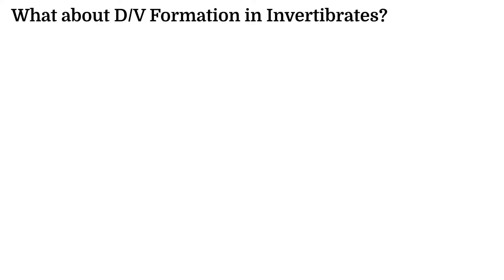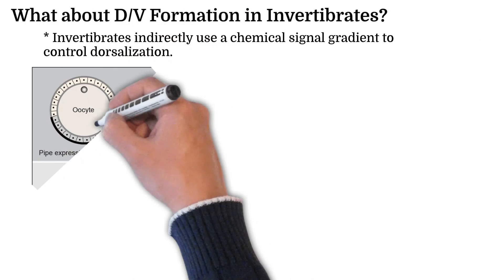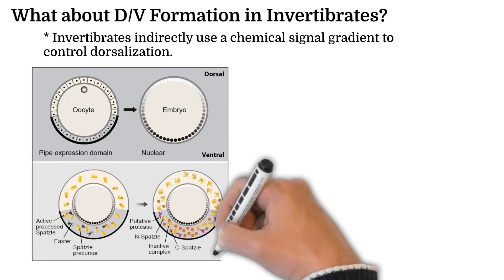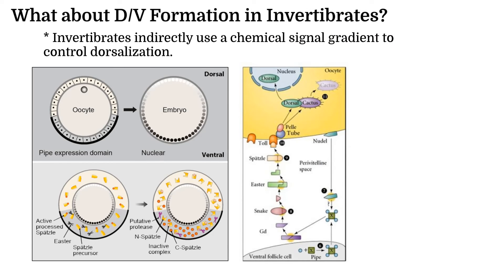Like before, let's dive into whether or not similar factors are at play when developing the dorsal ventral positionings in invertebrates. The key to dorsalization is a protein called dorsal, which is floating around the cytoplasm of the oocyte. Dorsal begins the dorsalization process in the oocyte by entering the nucleus.